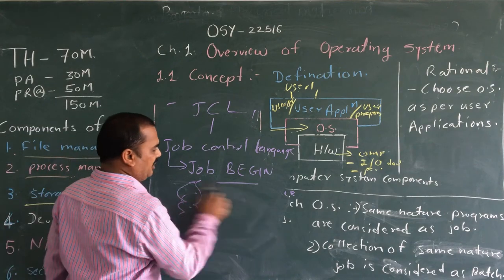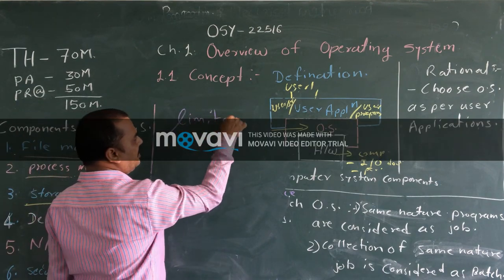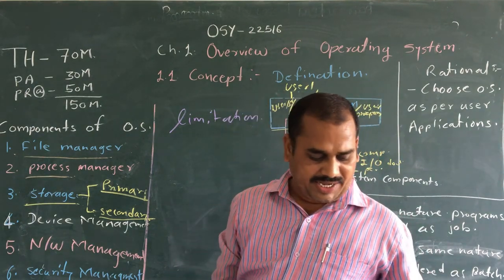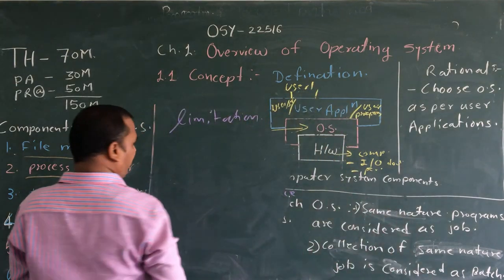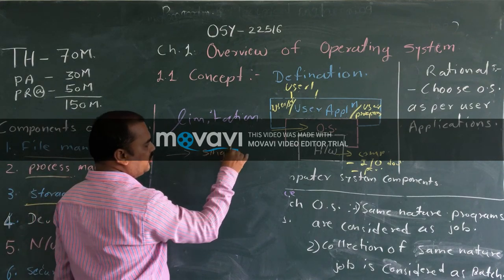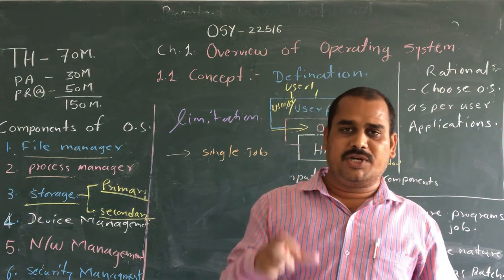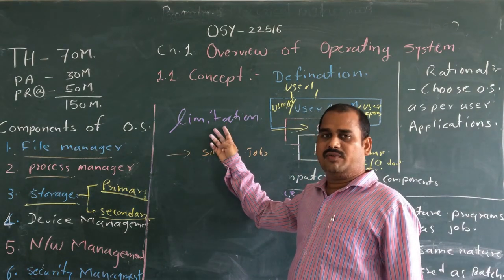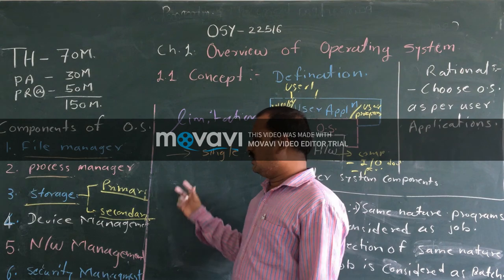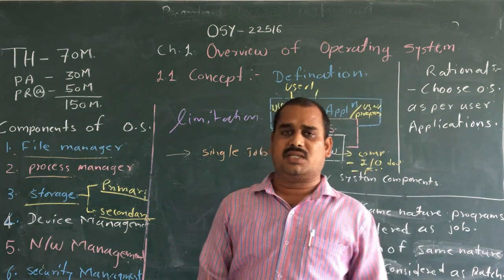Whenever the operating system encounters the job begin statement, it starts execution of that specific job line by line until it encounters the job end statement. After encountering the job end statement, the operating system moves to the next job. In this fashion, it executes all the jobs. However, the limitation of the batch operating system is that interactive sessions are impossible, because the batch system does not support interaction. After submitting a job, only after completion of execution will the system be responsive — it will not interact with the user in between. The batch operating system is utilized only when programs take a longer time for execution.